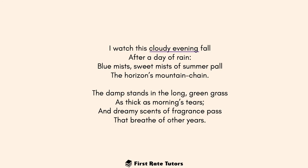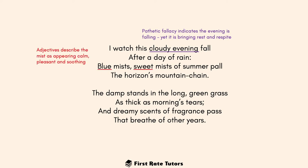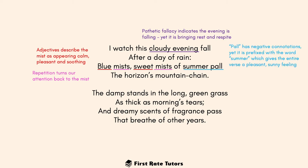In the third verse, the speaker states 'I watched this cloudy evening fall.' Pathetic fallacy indicates that evening is falling but bringing rest and respite. Furthermore, there are 'blue mists, sweet mists' — the adjectives 'blue' and 'sweet' describe the mists as calm, pleasant, and soothing. The repetition of 'mists' turns our attention back to the mist from the first verse. The reference to 'summer pools' is interesting — 'pool' has negative connotations of shadow, but it's prefixed by 'summer', giving a pleasant sunny feeling, because summer represents happiness.